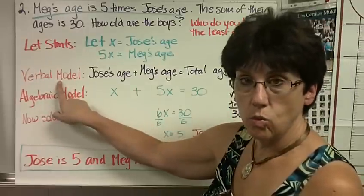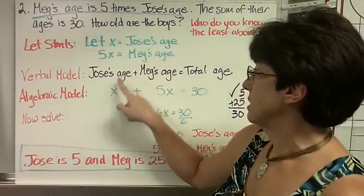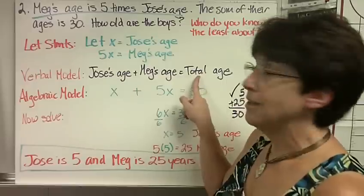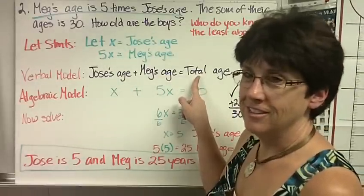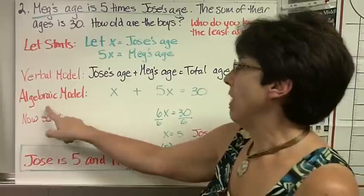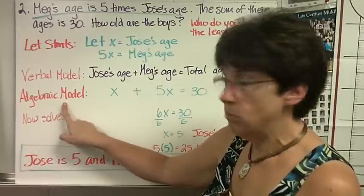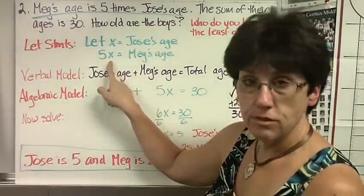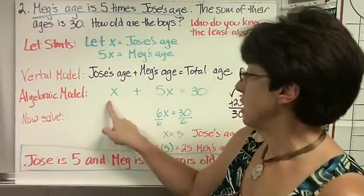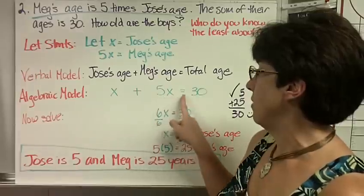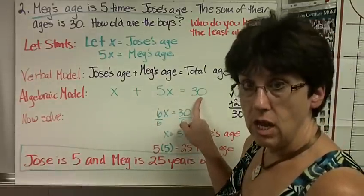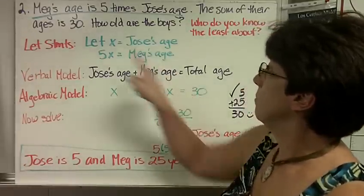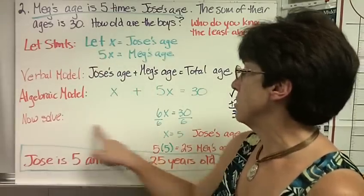Verbal model is the words. Jose's age plus Meg's age equals total age. See, that sounds funny, so I like it. The algebraic model is the variables. Jose's age is x. Meg's age is 5x. We just substitute that in. Jose's age x plus 5x equals 30. And the total age came from the problem up here. And now we solve it.